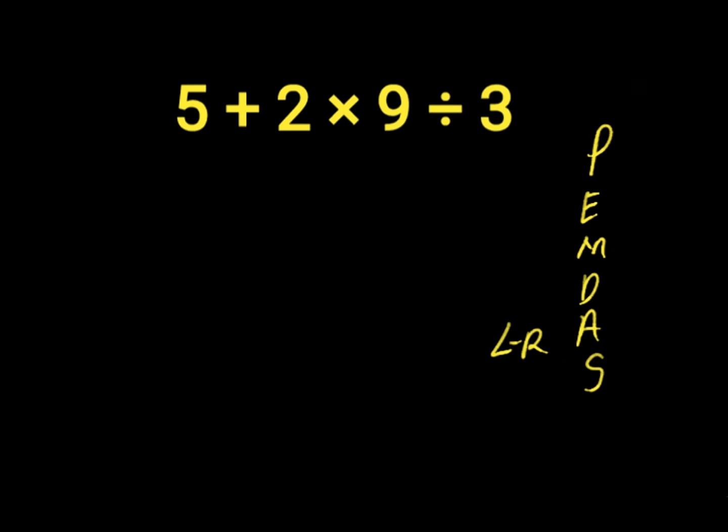2 times 9 will give us 18. Then we have 5 plus 18 divided by 3. We start with division here because division comes before addition.